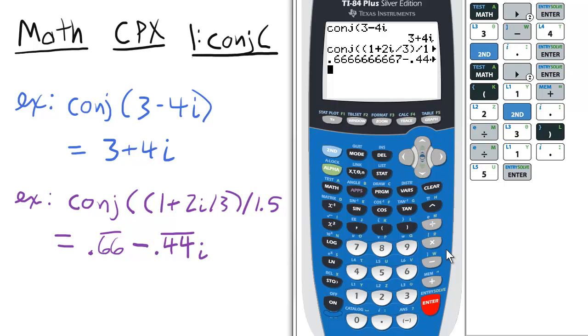Notice the conjugate is 0.6 repeating minus 0.4 repeating i. Not to worry—we can take out both the real and imaginary elements and break them down to fractions, which we do in the next two lessons.